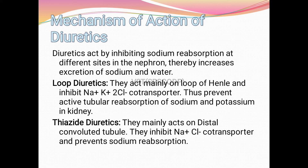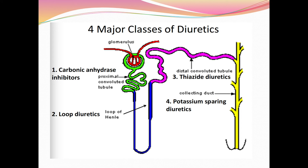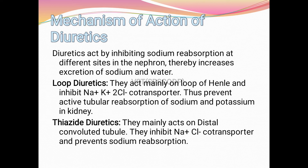Loop diuretics mainly act on the loop of Henle and inhibit the Na+, K+, 2Cl- co-transporter, thus preventing active tubular reabsorption of sodium and potassium in the kidney. Loop diuretics mainly act on the ascending loop of Henle, inhibiting the sodium-potassium-chloride co-transporter, thus preventing active tubular reabsorption of sodium and potassium.